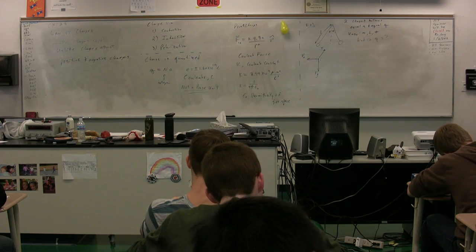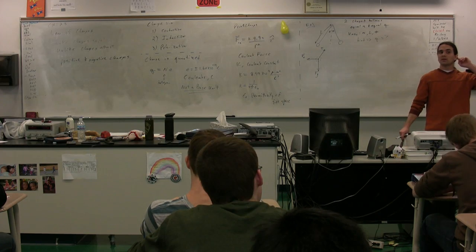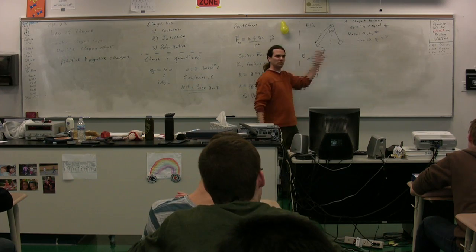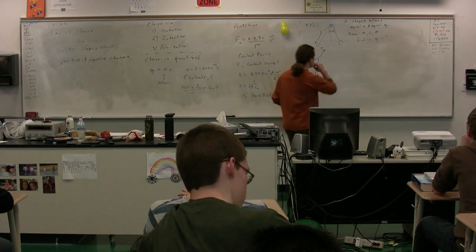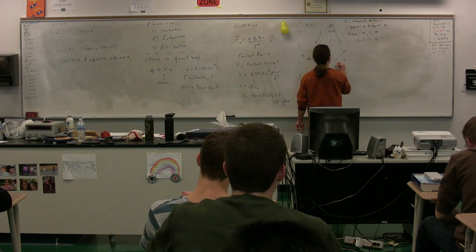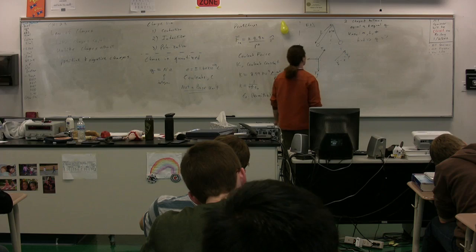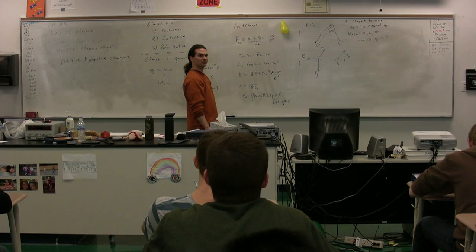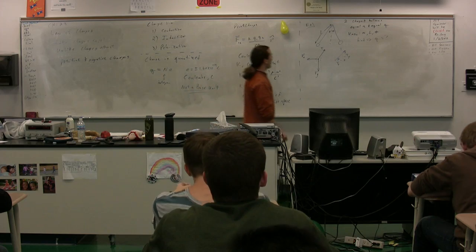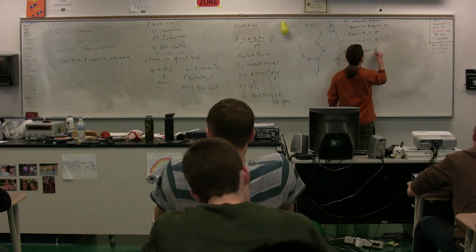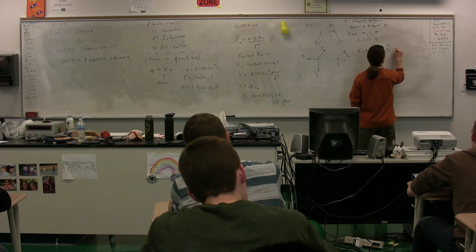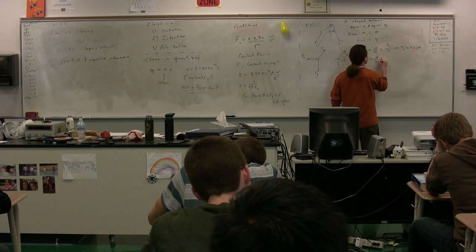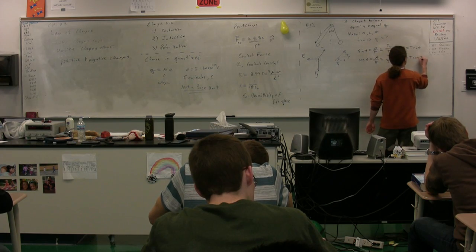What should we do next? Break up forces into X and Y components. We could do the same thing with the balloon on the right, but they're going to be mirror images of one another, so we just need to look at one of the two. We have tension in the X direction and tension in the Y direction. Theta here is the same as that theta — alternate interior angles, two parallel lines. So tension in the Y direction equals T times sine of theta, and tension in the X direction equals T times cosine of theta.